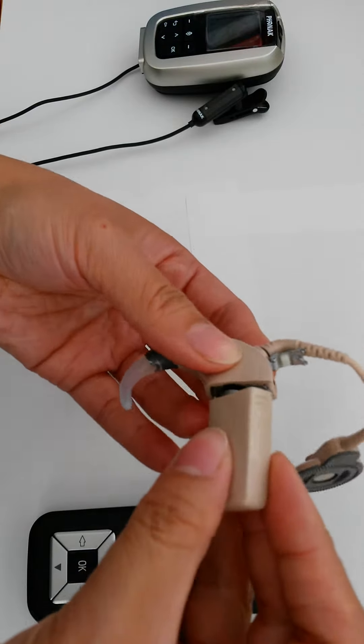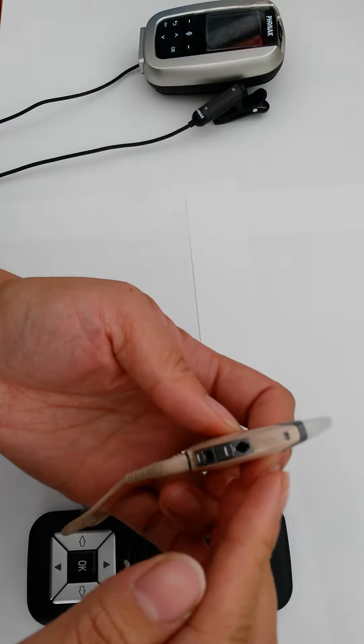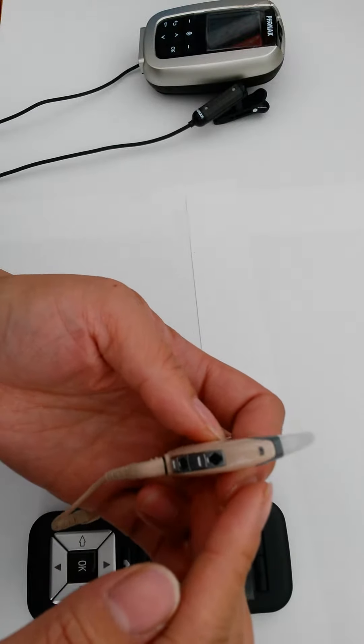Twist the battery back into place. Look for blinking lights on the ear hook, which indicate the processor is now turned on.